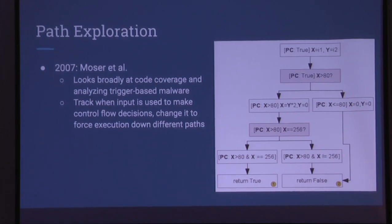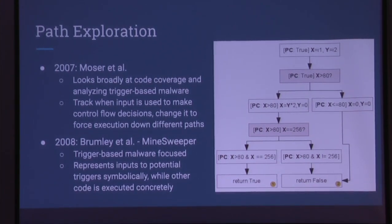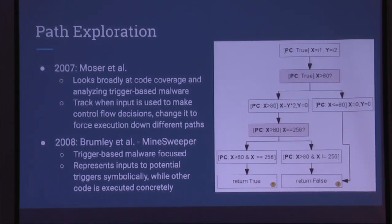Path exploration approaches — Mosher et al. and Brumley et al. used symbolic execution to look at trigger-based malware that may not run for arbitrary reasons, such as only running after a certain date or if a certain file is present. Brumley's approach used concolic execution — concrete and symbolic — forcing execution down different paths to observe all possible behavior the malware may exhibit, detecting and mitigating evasion by forcing both branches of a conditional jump.